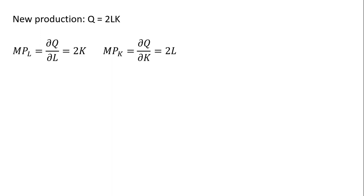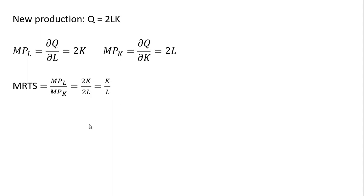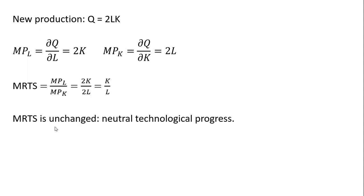Now taking the new production function, we're going to solve for the marginal rate of technical substitution and see if it increased, decreased, or stayed the same. The marginal product of labor with this production function is 2K, and the marginal product of capital is 2L. Forming the marginal rate of technical substitution, this simplifies to K divided by L. Therefore, the marginal rate of technical substitution is unchanged, so this represents neutral technological progress.